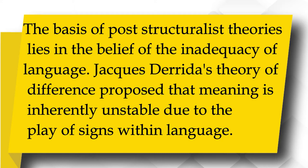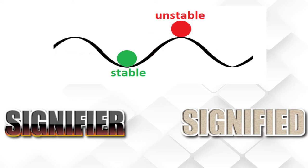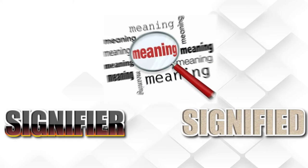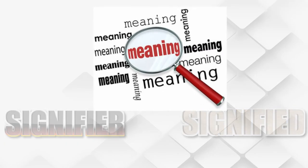Jacques Derrida's theory of différance proposed that meaning is inherently unstable due to the play of signs within language. This is because a signifier and a signified exist within language which provides the meaning of the word or phrase. At its most basic level, the signifier may be the letters F-I-S-H which provides the reader with the signified, the word FISH.